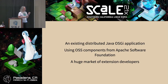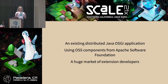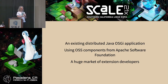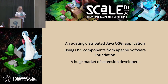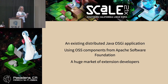It's an existing distributed Java OSGI application. Before we moved it to the cloud, it was already a distributed application, so that had benefits already. People could run this on-prem across multiple VMs and machines, and it would scale horizontally. It uses a lot of open source components from the Apache Foundation.